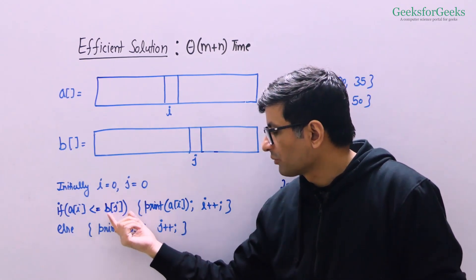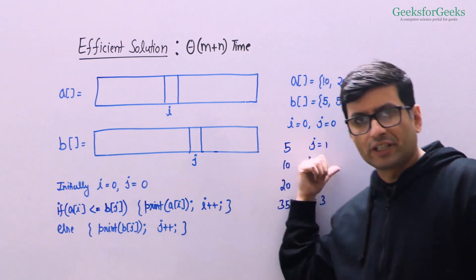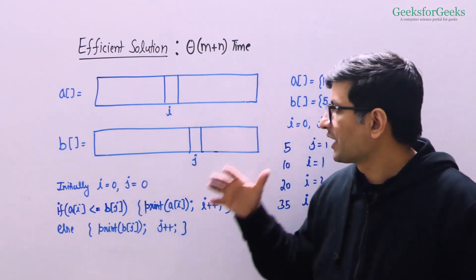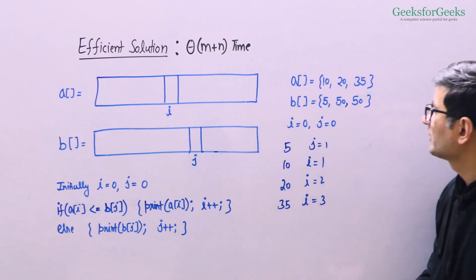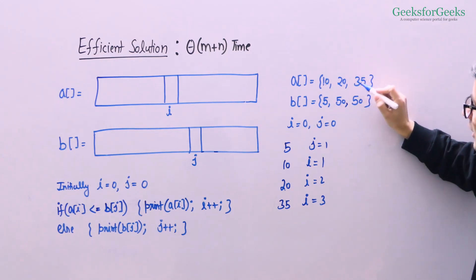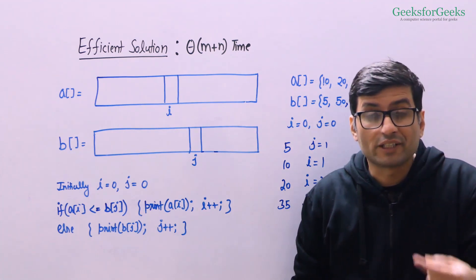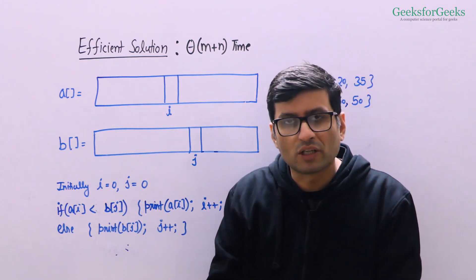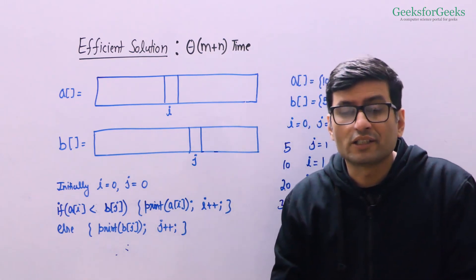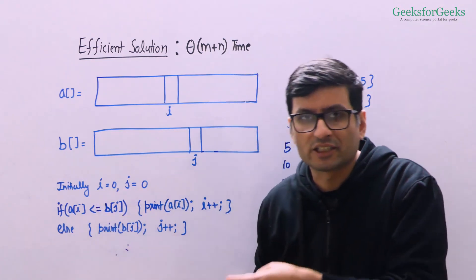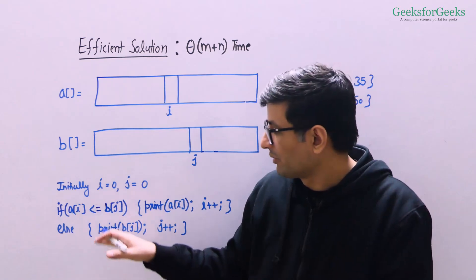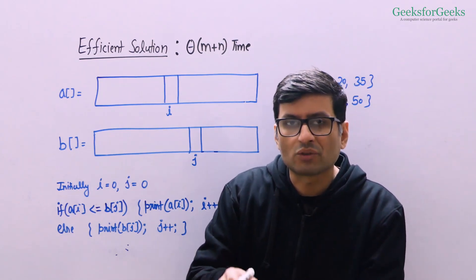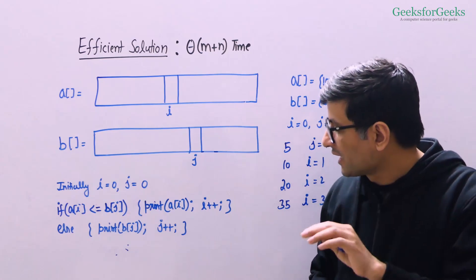When a[i] is smaller than or equal to b[j], we print a[i] and do i++. Otherwise we print b[j] and do j++. Now why do we have the equal-to sign? This merge function is stable: if both arrays have an equal element, the array A element will appear first in the output. This is ensured by the less-than-or-equal condition. If we remove the equal-to sign, it is not guaranteed that array A elements appear first in case of equal values. Stability is important in sorting — we are discussing this logic for the merge function of merge sort, and merge sort is stable.